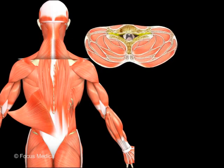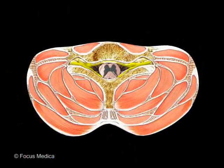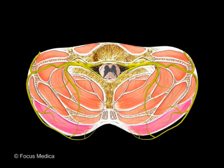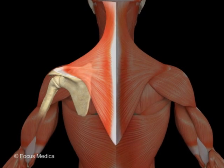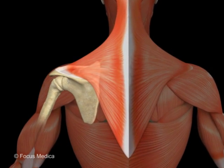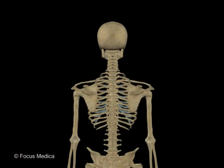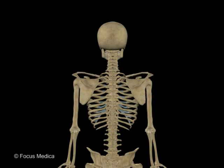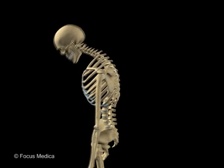Back muscles can be classified into a superficial and a deep group. The superficial group of muscles have migrated to the back and carry their nerve supply from the anterior ramus of the spinal nerve. The trapezius is a major scapular stabilizer and contributes to scapulothoracic rhythm by elevating, rotating, and retracting the scapula.